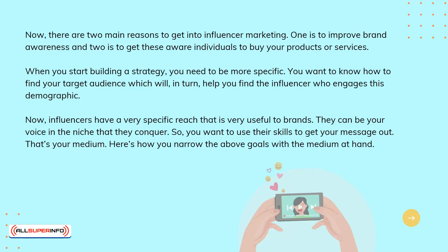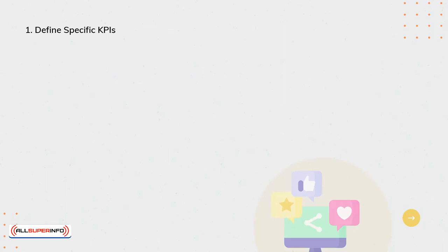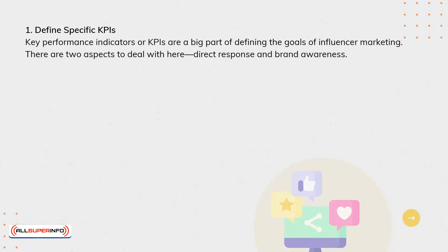You want to use their skills to get your message out — that's your medium. Here's how you narrow the above goals with the medium at hand. Define specific KPIs. Key performance indicators, or KPIs, are a big part of defining the goals of influencer marketing. There are two aspects to deal with here: direct response and brand awareness.